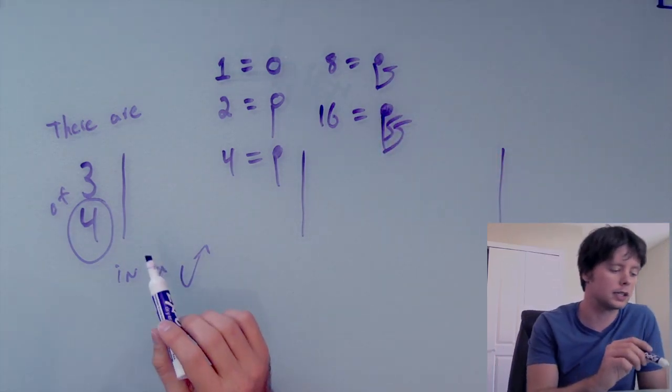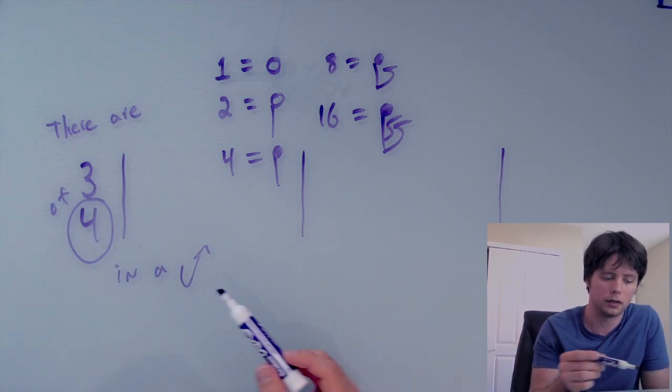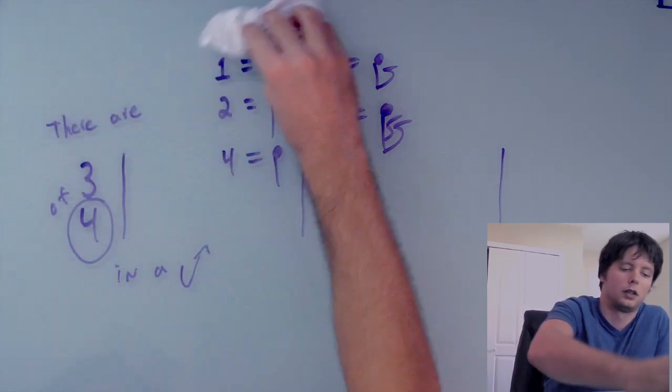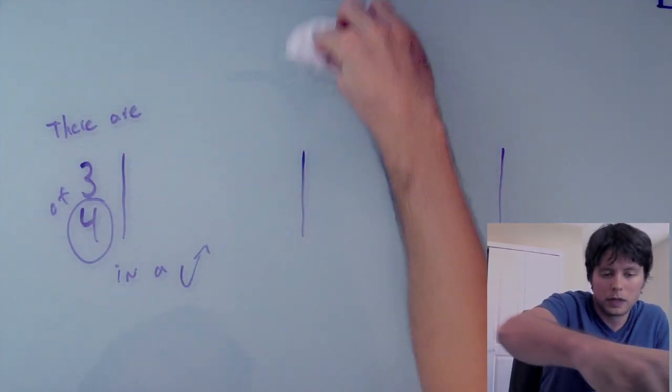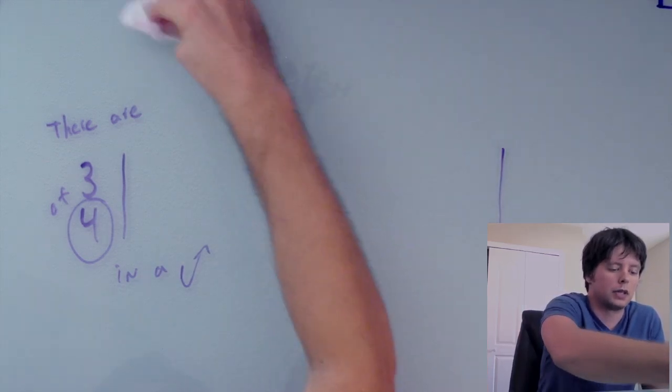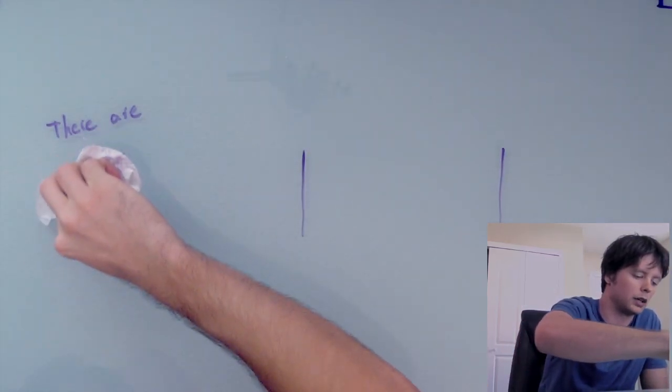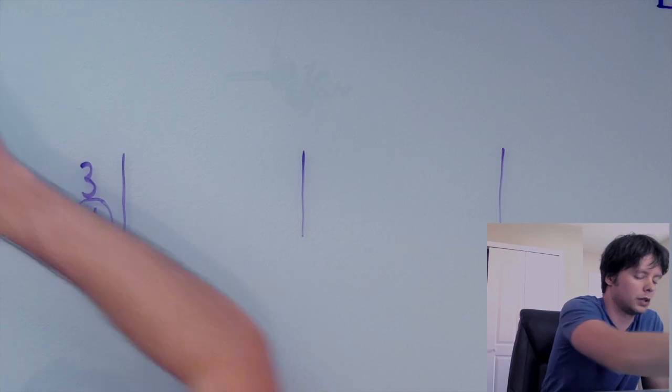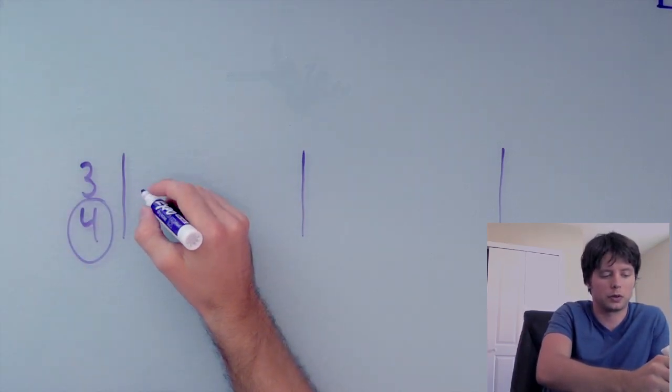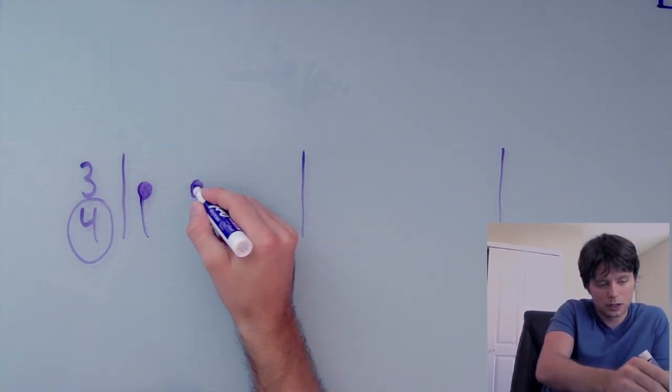You would read this as there are three quarter notes in a measure. Now that doesn't mean there are literally three quarter notes in a measure. There certainly could be. But there doesn't have to be. So we could have a measure that looked like this, just three quarter notes. But it could also just be something equivalent.